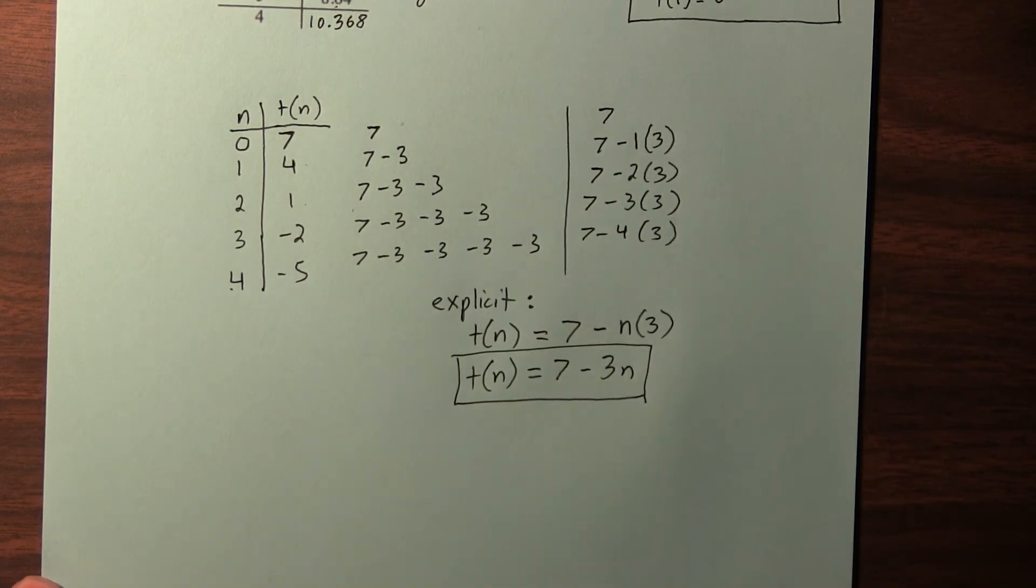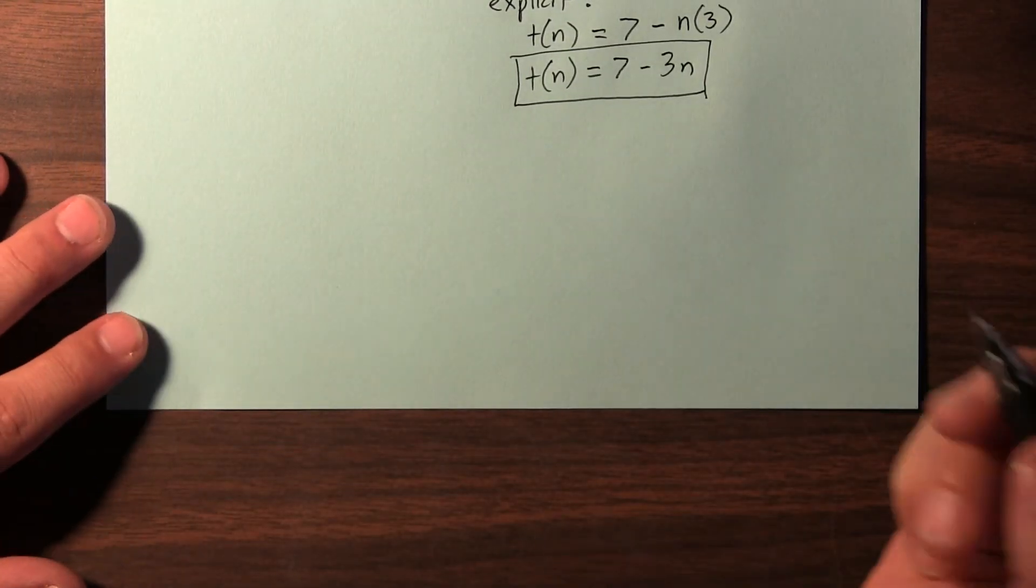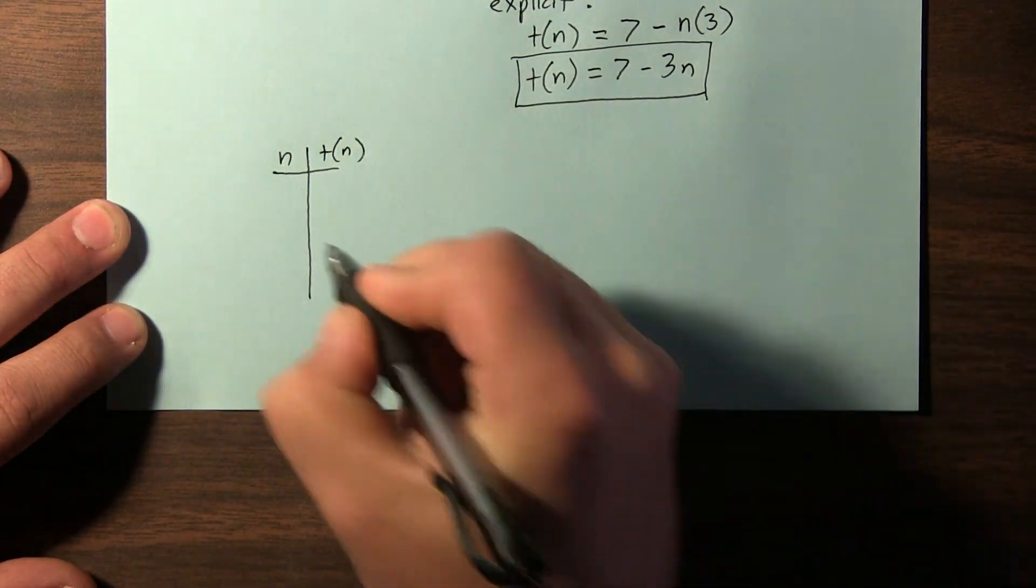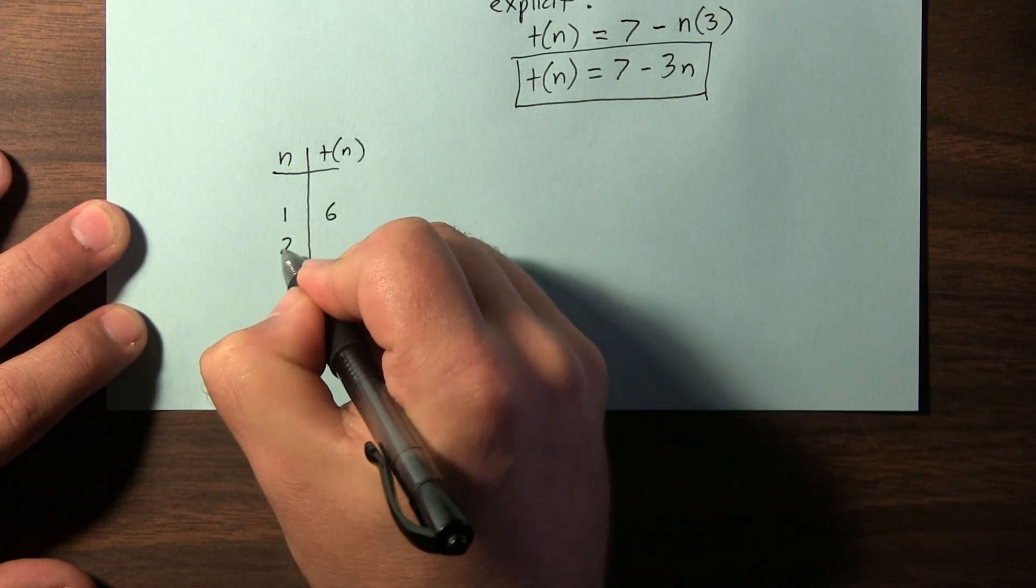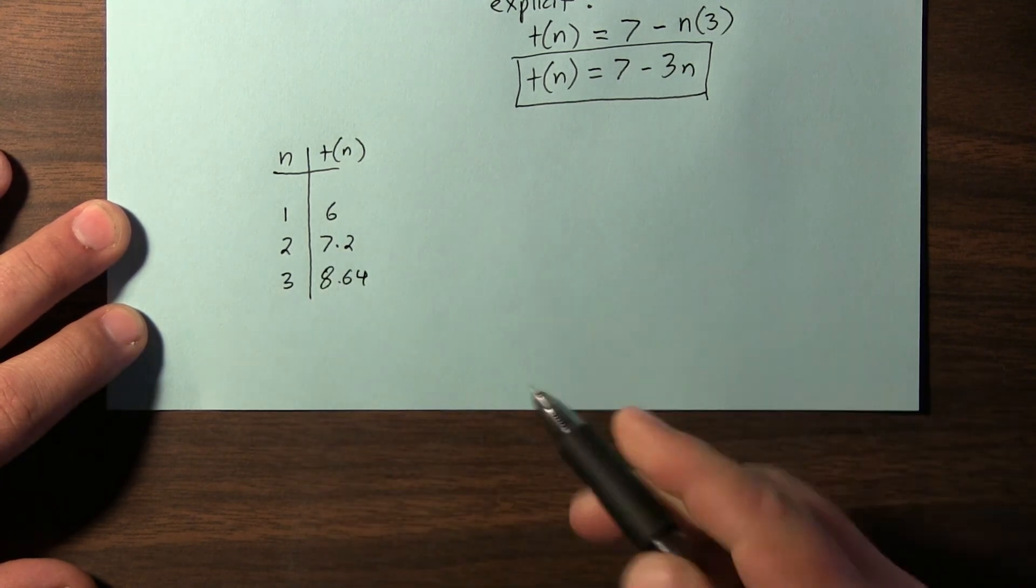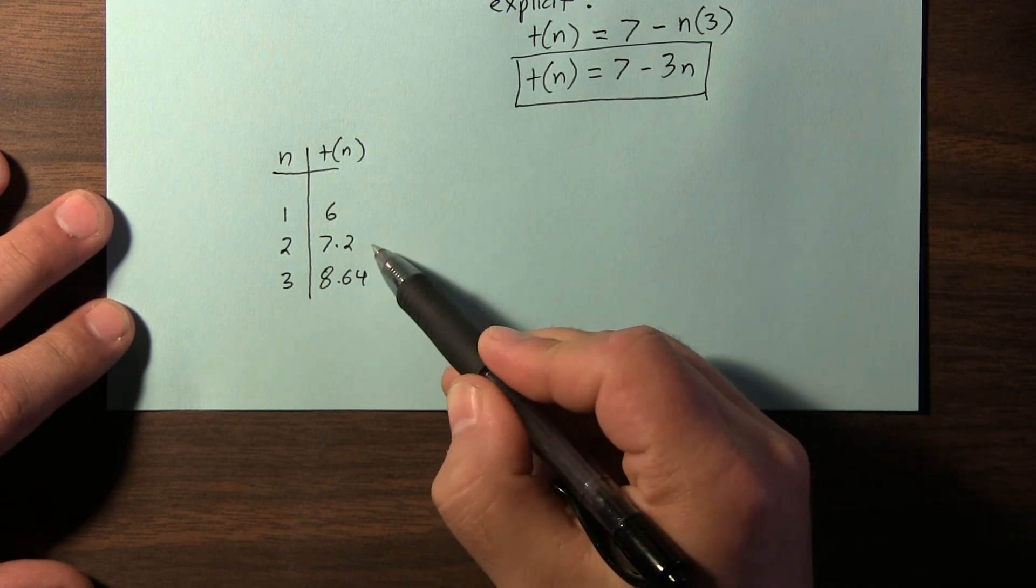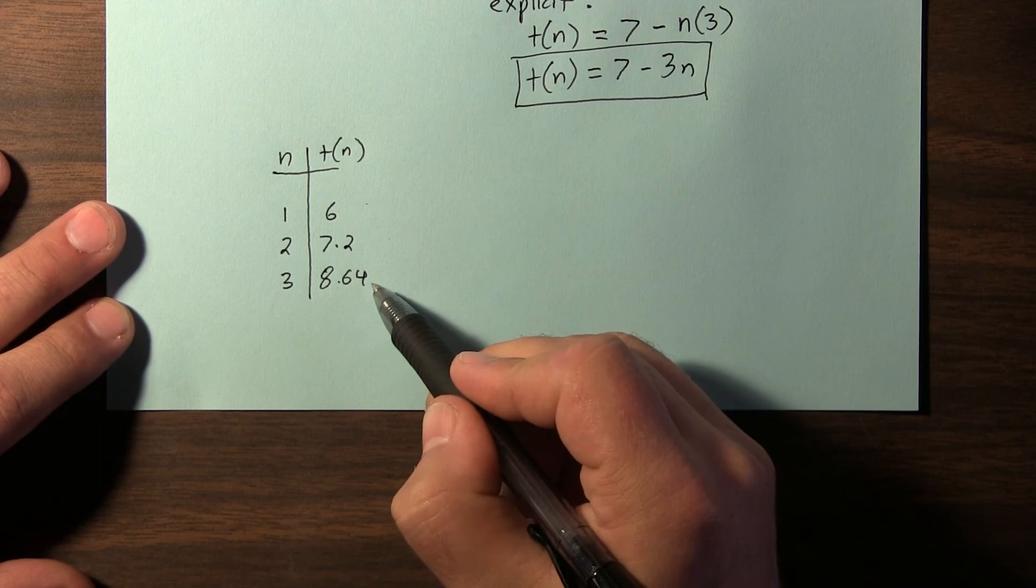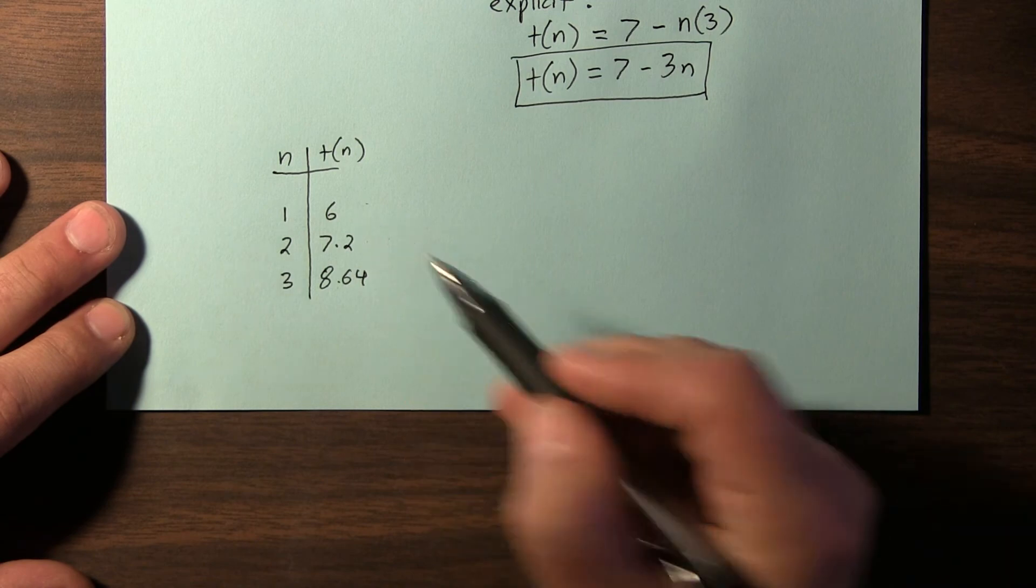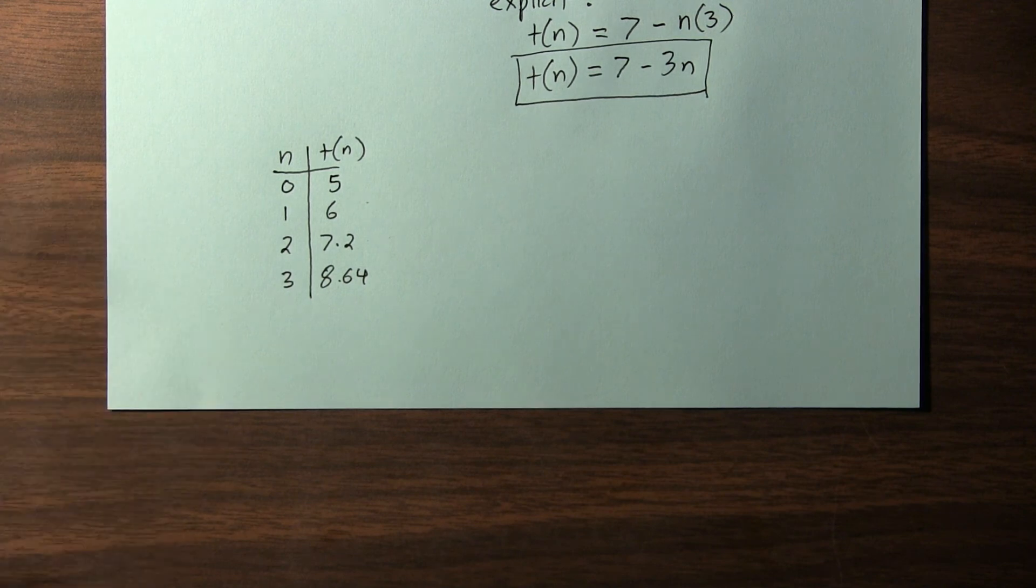Let's look at the other table and see if we can do something similar. So I'm going to reproduce the table from B. So the first term was 6, the second term was 7.2, and the third term was 8.64. Now we saw that to get the next term, we multiply by 1.2. If we want to go this way, we have to divide by 1.2. So this divided by 1.2 is this. This divided by 1.2 is this. 6 divided by 1.2 is actually 5. So our initial term, our zeroth term, is 5.